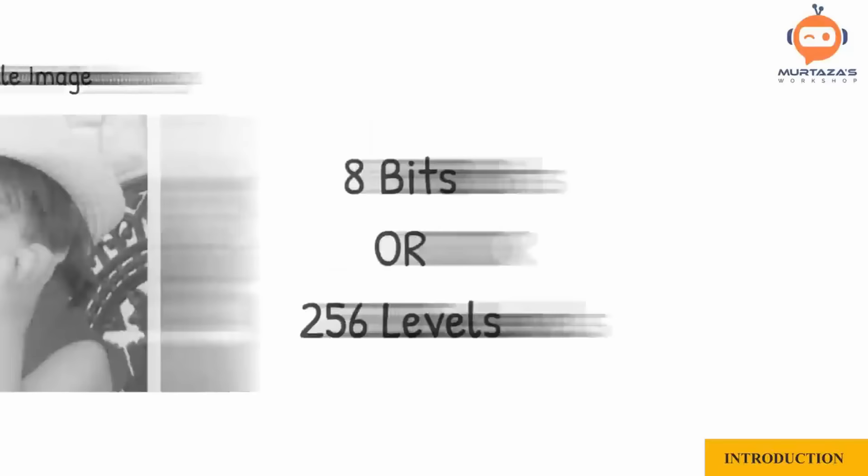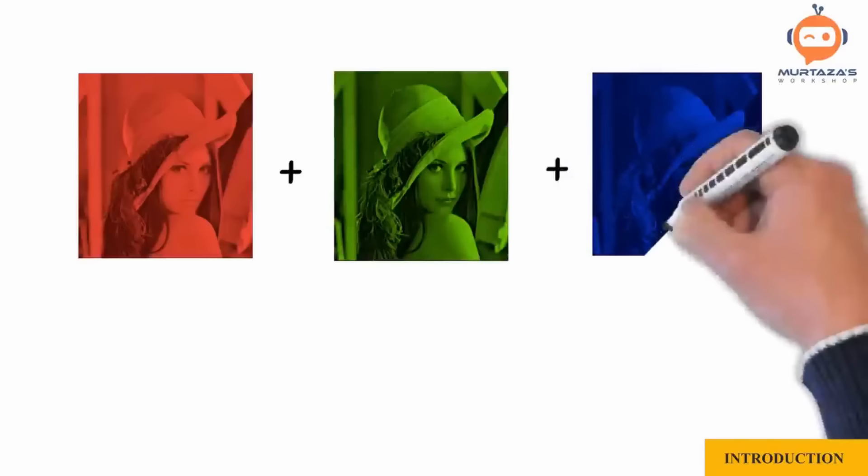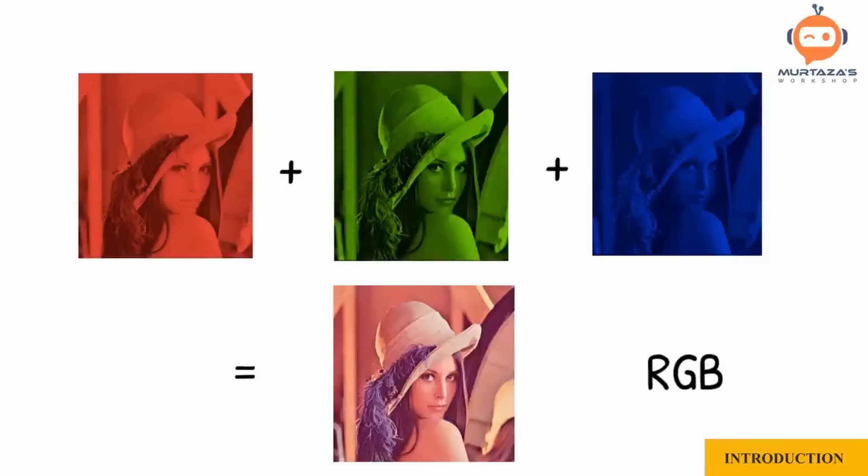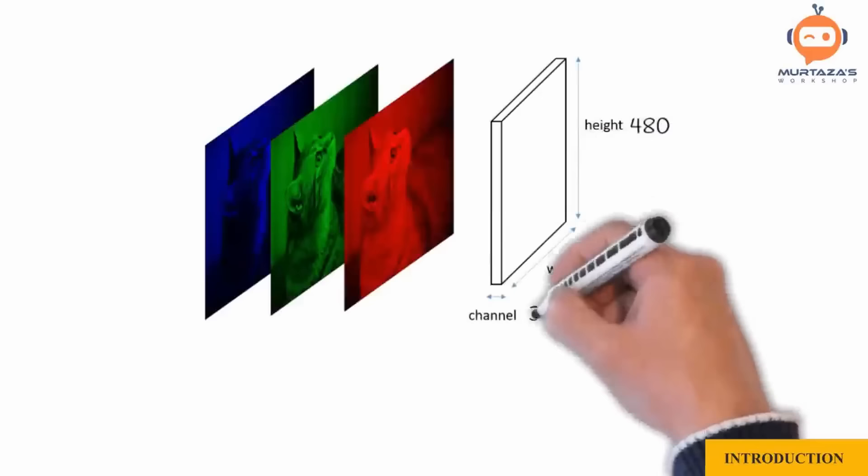For a colored image, we have three grayscale images representing the intensities of red, green, and blue — in short, RGB. Adding these images together gives us a full color image. This means a colored VGA image is 640 by 480 by 3.